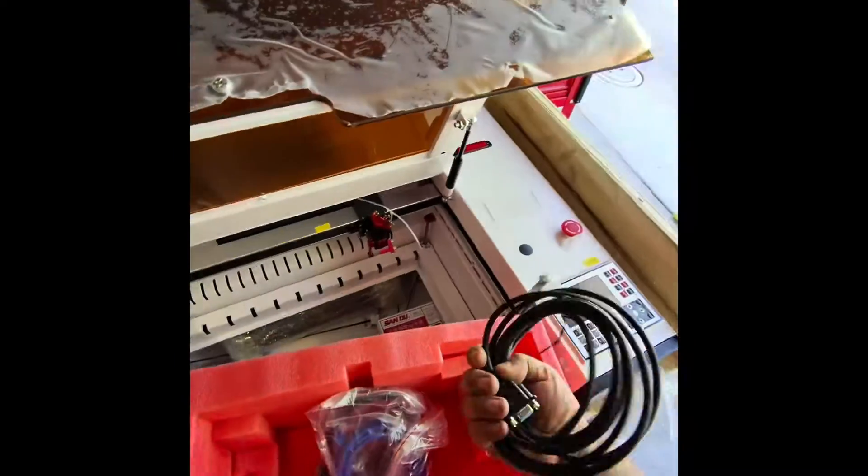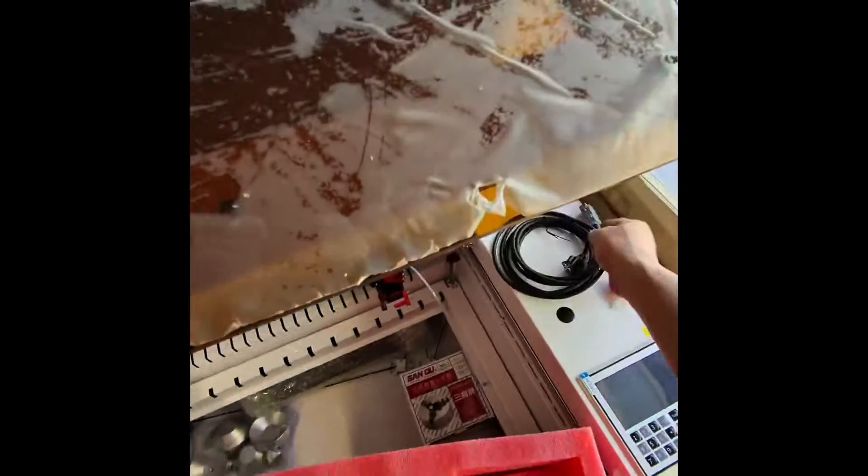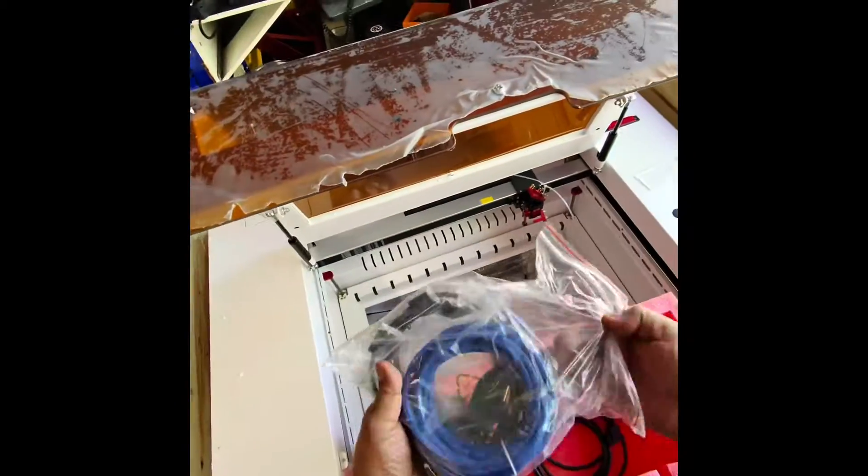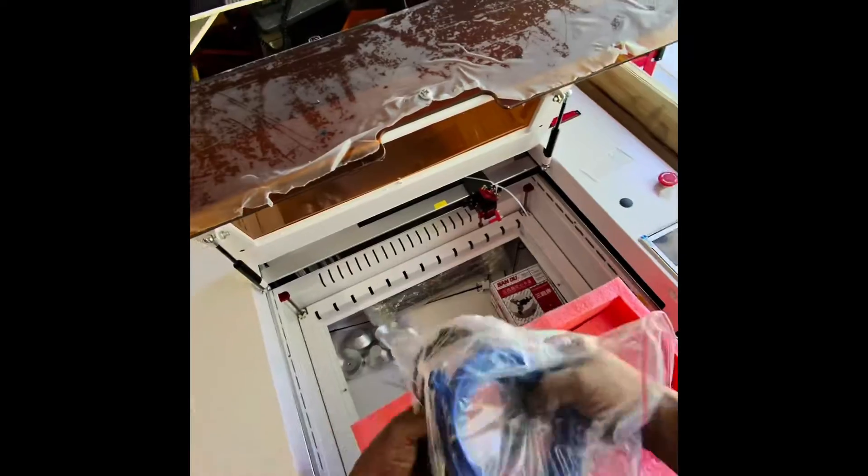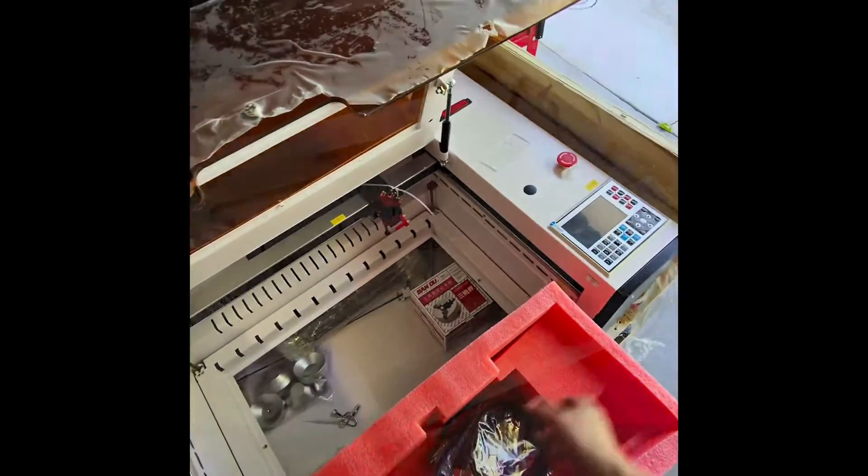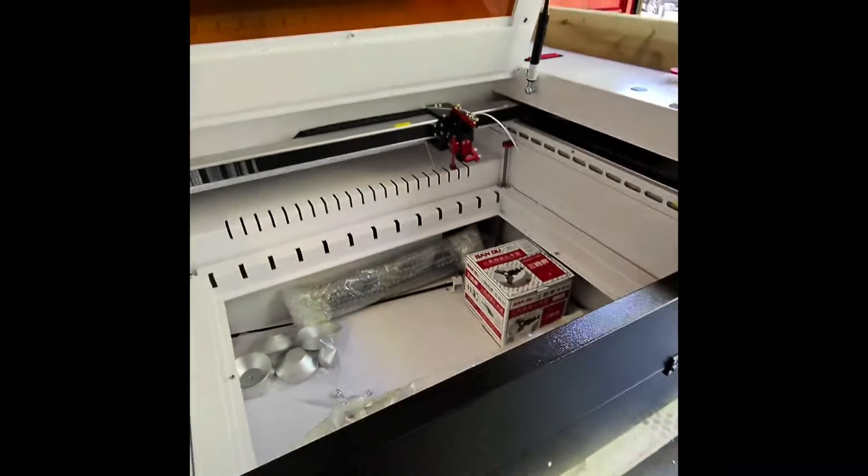Alright, so inside we find this phone box that has this cable. Yeah, that cable is the rotary cable for the servo motor, and of course the Ethernet cable and USB cable to complete all the cables we need.